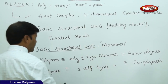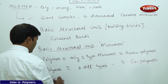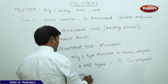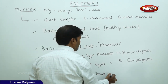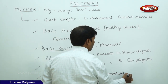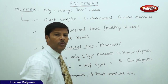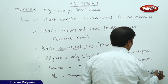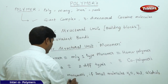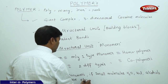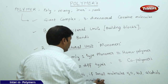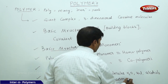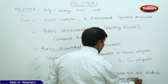A polymer which is formed between two monomers where small molecules like H₂O, HCl, or alcohols are eliminated — we call such polymers condensation polymers.